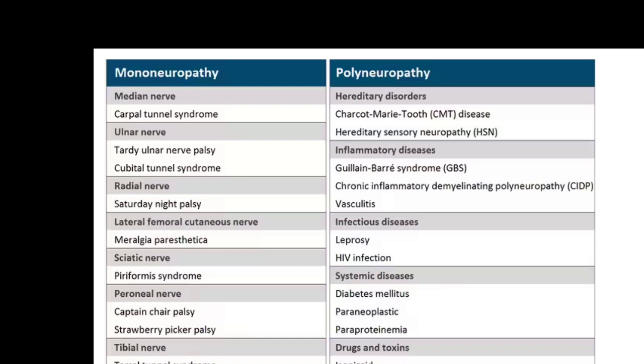Polyneuropathy is more common in either hereditary diseases or inflammatory diseases like Guillain-Barré syndrome, chronic inflammatory or vasculitis, or infectious diseases like leprosy or HIV infection, systemic diseases like diabetes mellitus, paraneoplastic and paraproteinemia, and drugs like isoniazid and alcohol. The causes are many and the varieties of the diseases are too many.